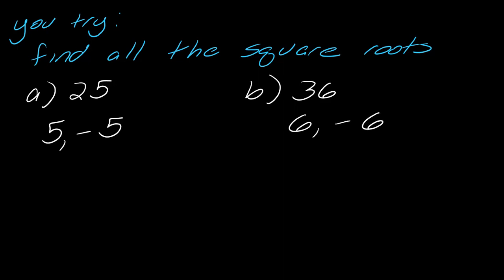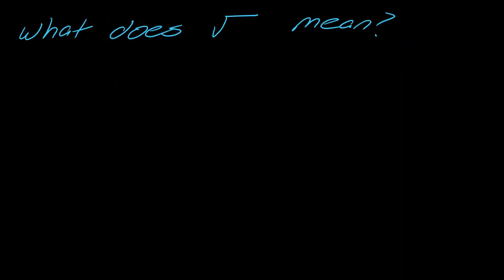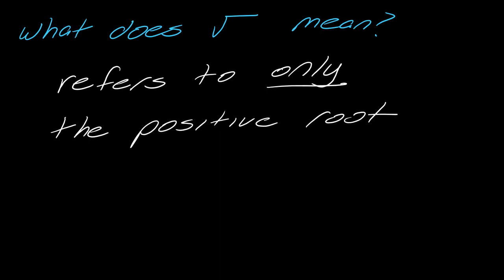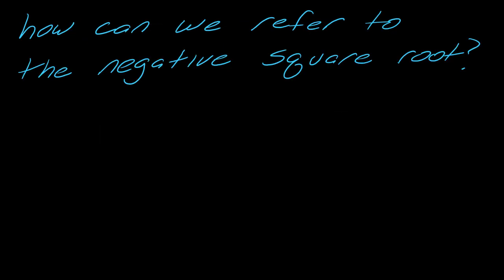We have a little bit of an issue here because we do have two numbers. We need some way to clear up which one we want, and so that's where this symbol comes in. The square root symbol refers to only the positive root. To get the negative square root, you would just put a negative in front of the square root symbol.